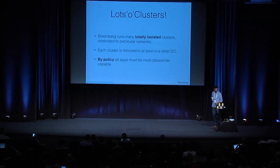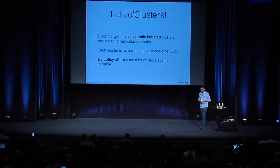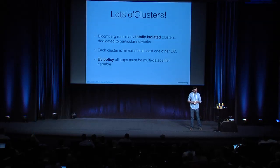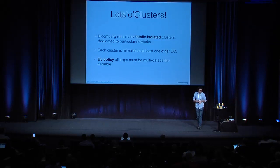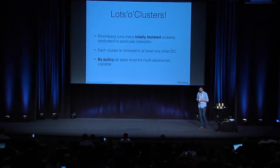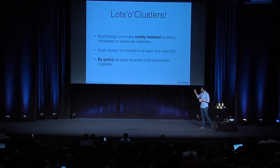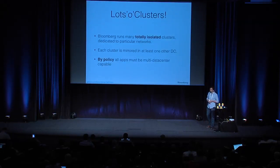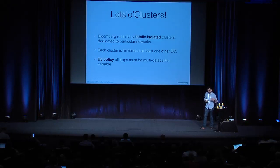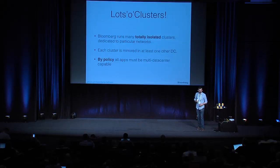That's what we actually run in production. We have lots of individual isolated clusters — rather than one large OpenStack cloud, we have lots of smaller ones in different networks and different data centers. Each network zone is mirrored in at least another data center. By policy, every app that runs on us at the platform layer has to be able to run on more than one data center, so it can fail over to the other side with no problem.